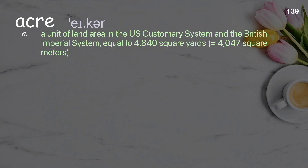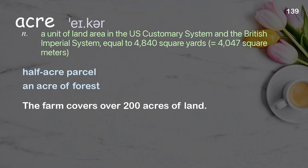Acre: a unit of land area in the US customary system and the British imperial system, equal to 4,840 square yards or 4,047 square meters. Examples: half acre parcel; an acre of forest. The farm covers over 200 acres of land.